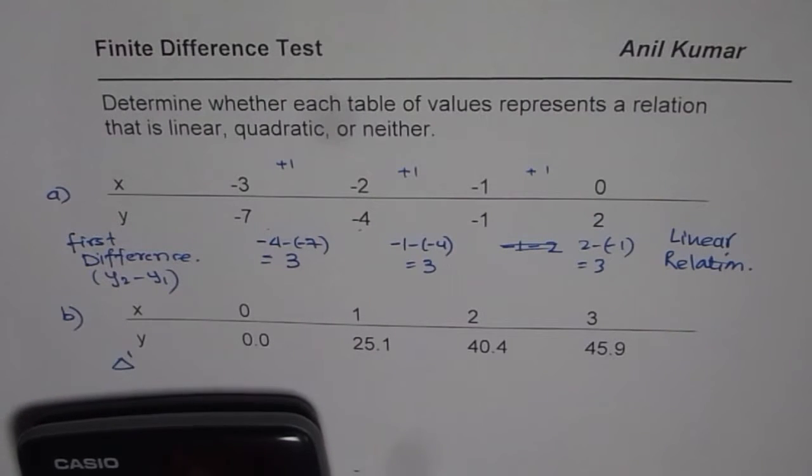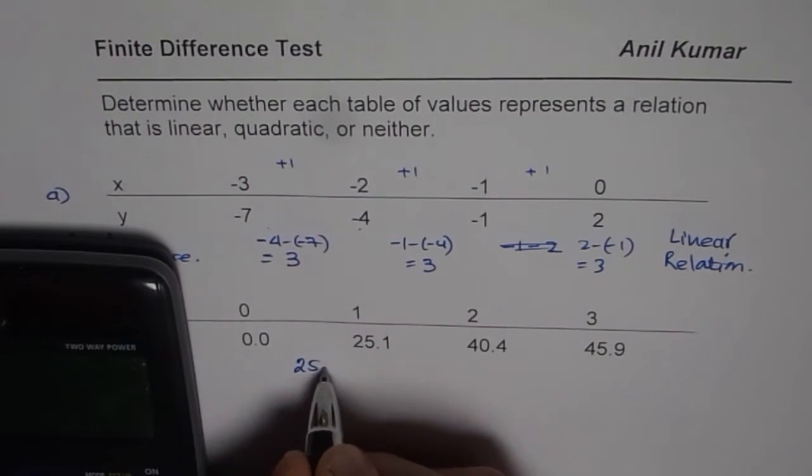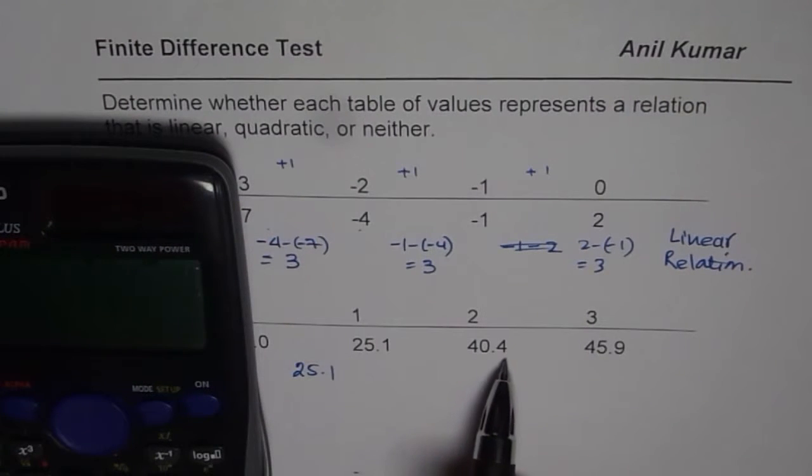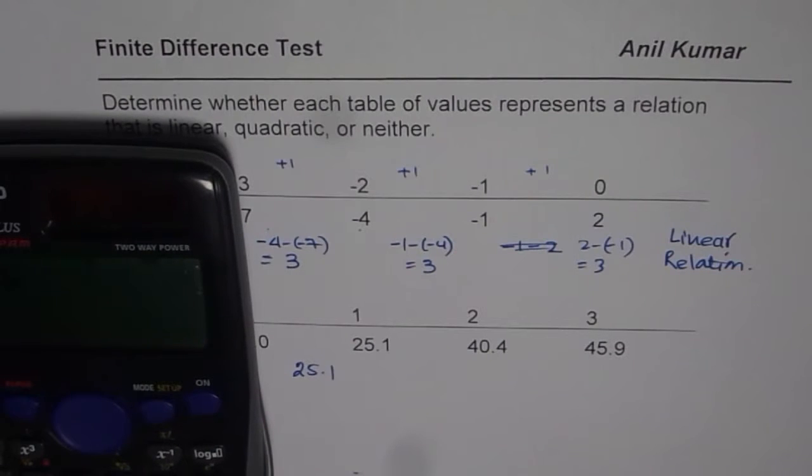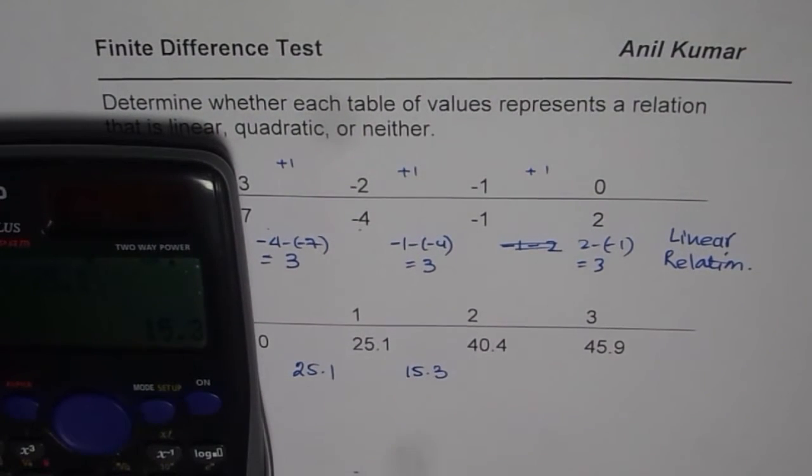So, for finding the first difference, we will do 25.1 minus 0.0, which is 25.1. Now, let us do 40.4 minus 25.1. That gives us, let us check it in decimals, it gives us a value of 15.3.